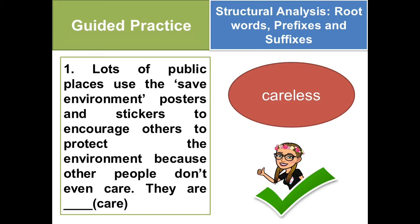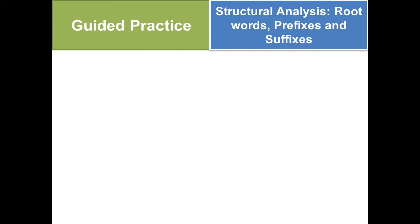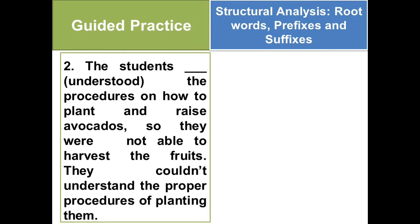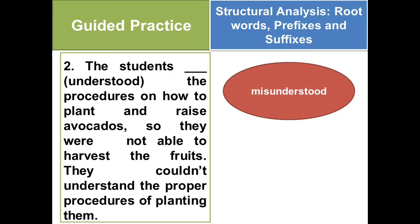Number 2: The students blanked the procedures on how to plant and raise avocados, so they were not able to harvest the fruits. They couldn't understand the proper procedures of planting them. You're going to try: misunderstood. I will give you two claps. The answer is misunderstood. Add prefix 'mis' to the root word understood. The sentence showed that the students did not understand the process of planting avocados.